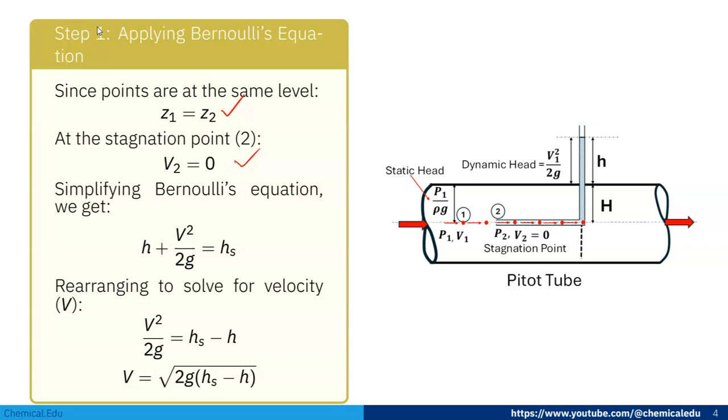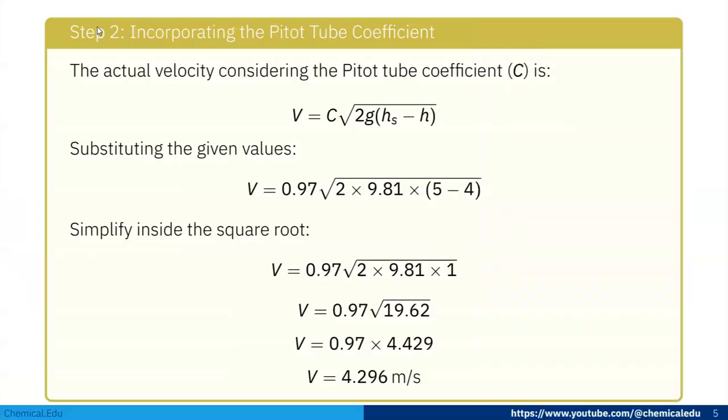v²/(2g) = h_s - h, so v = √(2g(h_s - h)). Now we have all this data and can plug it in to get the value.